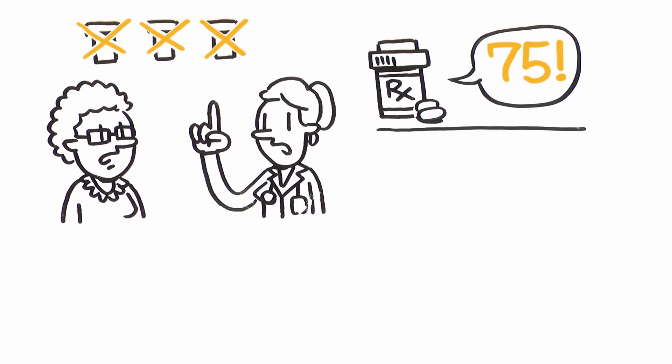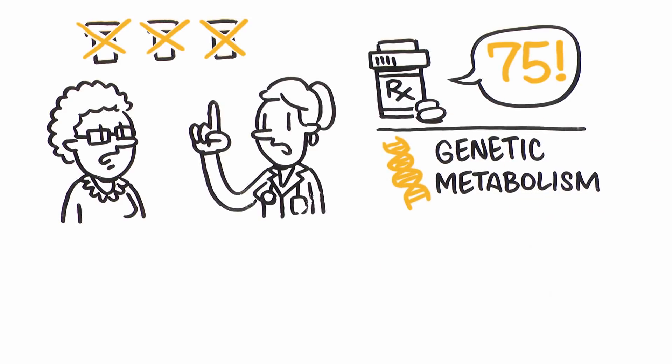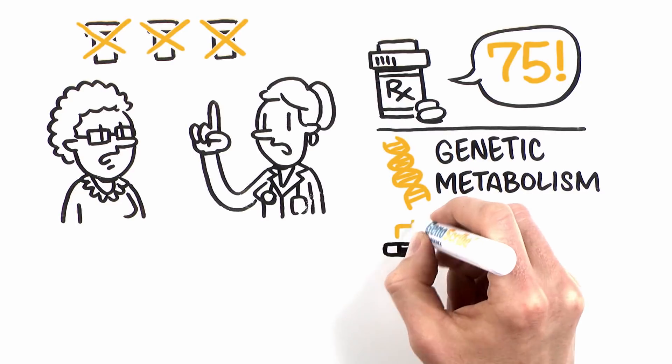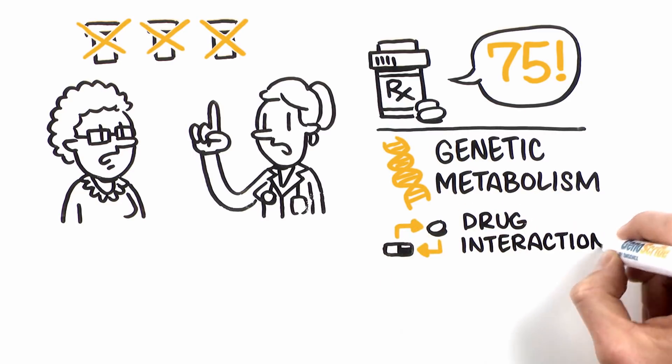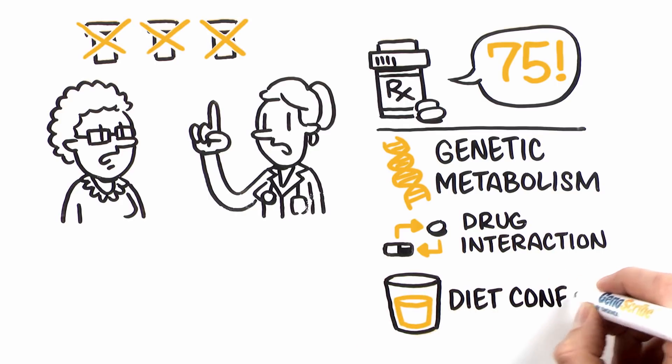20 would be considered high because Anita's genetics won't allow her to metabolize the drug at the right rate, because her prescriptions of heart medications conflict, and because her daily glass of grapefruit juice can cause one medication to dramatically slow her heart rate.